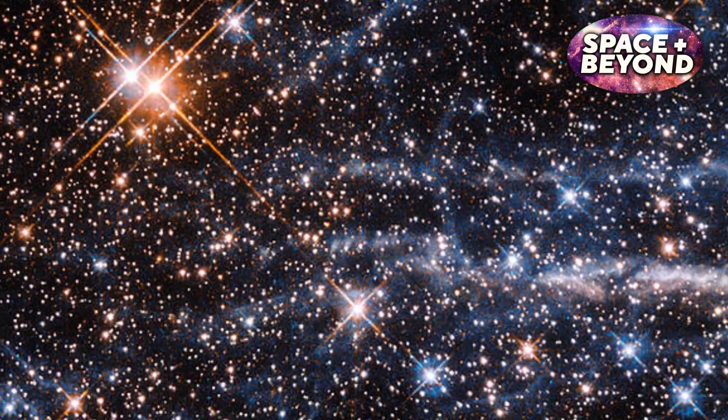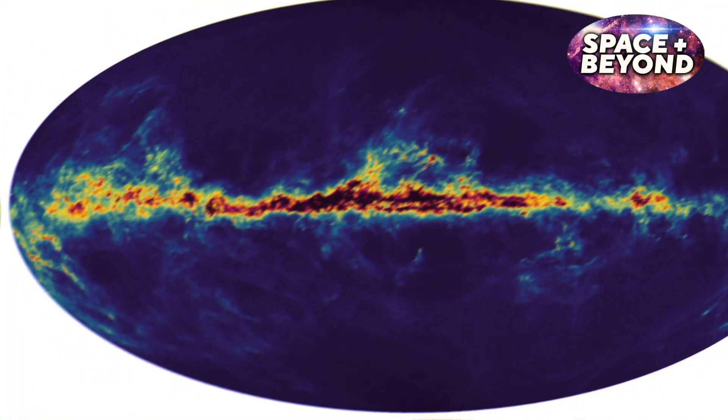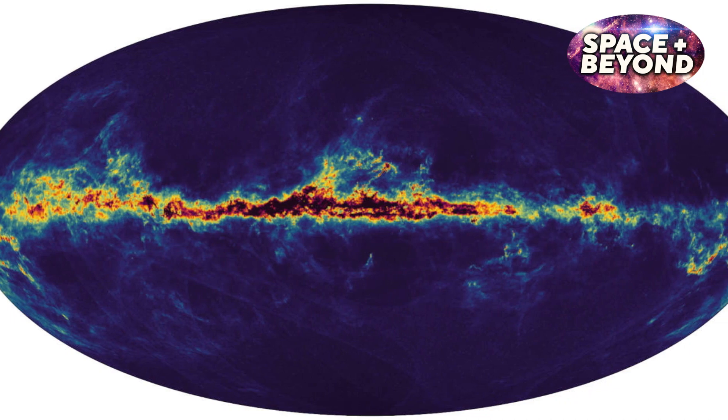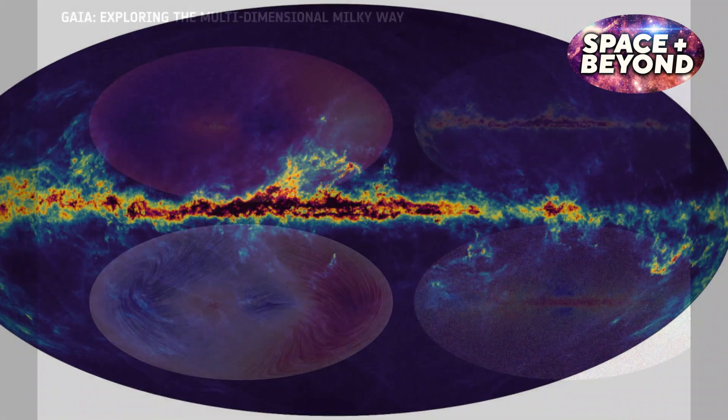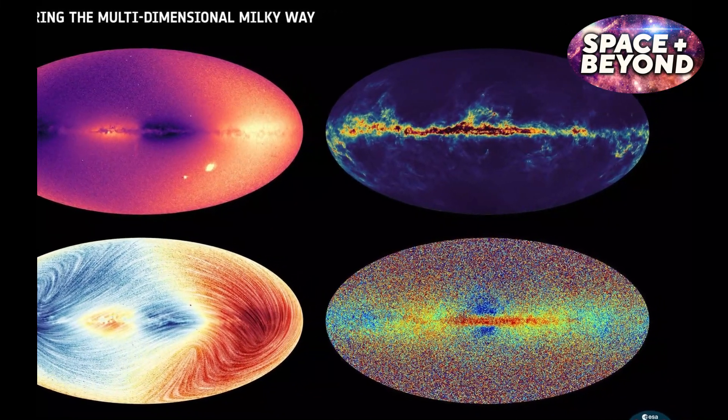It also measures their colors and brightnesses with great precision, which helps astronomers get a better understanding of how these bodies are distributed throughout the galaxy. Gaia has already discovered thousands of new objects that have been unknown until now.